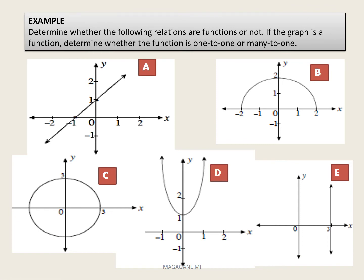We always start with the vertical line test. If the graph passes the vertical line test, we then go to the horizontal line test to check the type of function. If the graph is not a function, we don't need to check the type. Let's now determine whether the following relations are functions or not using the vertical line test, and if so, determine whether they are one-to-one or many-to-one using the horizontal line test.